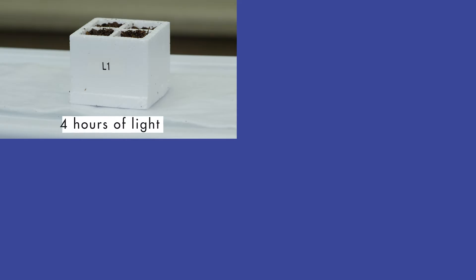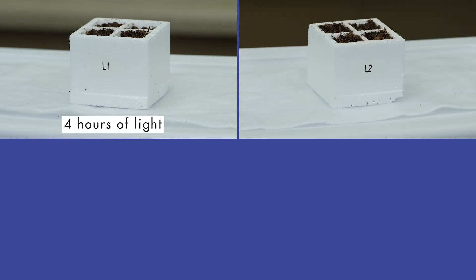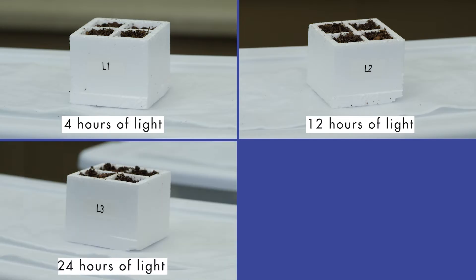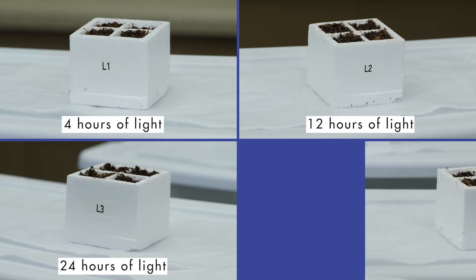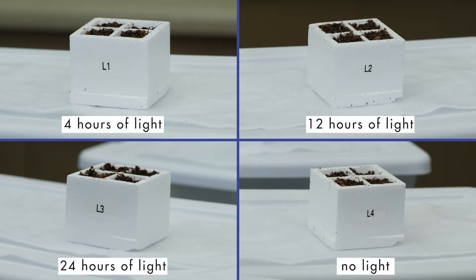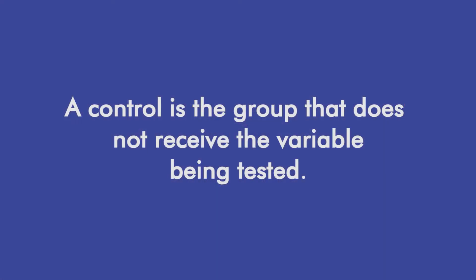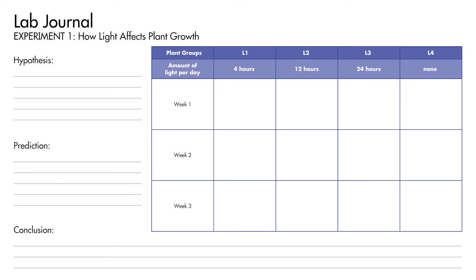The first group, designated group L1, will receive four hours of light per day. Group L2 will receive 12 hours of light per day. Group L3 will receive 24 hours of light per day. Group L4 will receive no light. In any laboratory experiment, one group is designated as the control. A control is the group that does not receive the variable being tested, and is used as a basis for comparison. For this lab, record your observations in a notebook or on separate paper — this will be your lab journal.